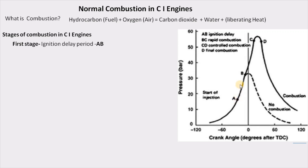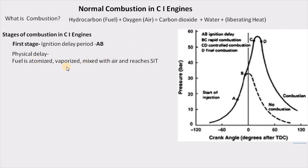The first stage is A to B, which we call the ignition delay period. Point A corresponds to the start of injection and B corresponds to the start of combustion. The ignition delay period is divided into two sub-stages. In the physical delay stage, the droplets entering the combustion chamber are atomized, vaporized, mixed with air to form an air-fuel mixture, and the mixture reaches self-ignition temperature. In the chemical delay period, the mixture at self-ignition temperature begins to burn, forming burning fireballs in the combustion chamber.